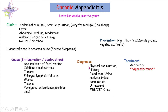For treatment, it is basically antibiotics, and after some time we can do a planned appendectomy. For prevention, giving high-fiber foods containing whole grains, vegetables, and fruits is recommended. That's it for chronic appendicitis.